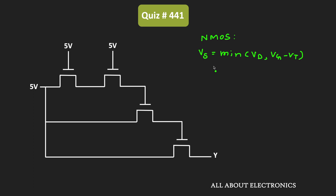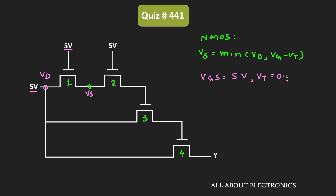In a recent video on the main channel, we already covered this in detail. Here, let's label the transistors: transistor 1, transistor 2, transistor 3, and transistor 4. For the first and second transistors, the gate input is equal to 5V. For the NMOS transistor while passing logic 1, the output at the source terminal is the minimum of Vd and (Vg − Vt). Let's find the voltage at the first node. This node acts as a drain terminal, so Vd = 5V and Vg for transistor 1 is also 5V. Initially assume Vs = 0, so Vgs = 5V.